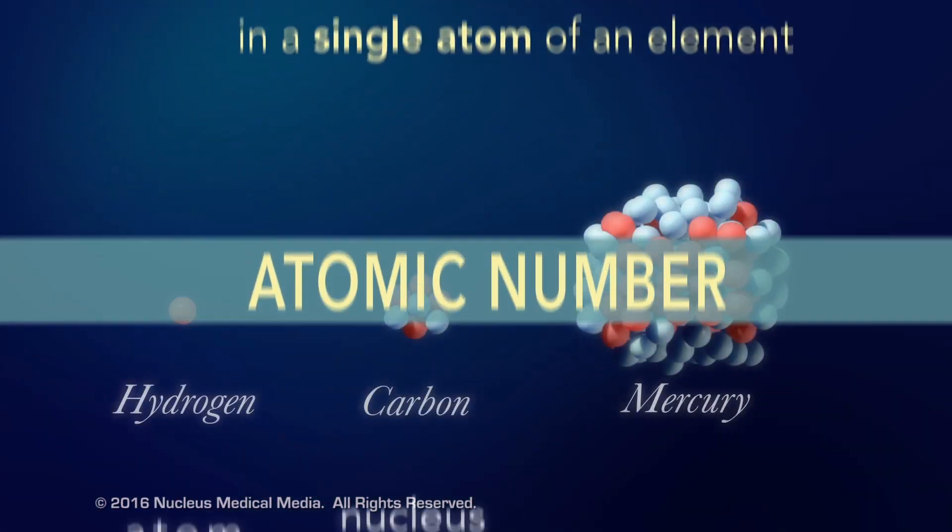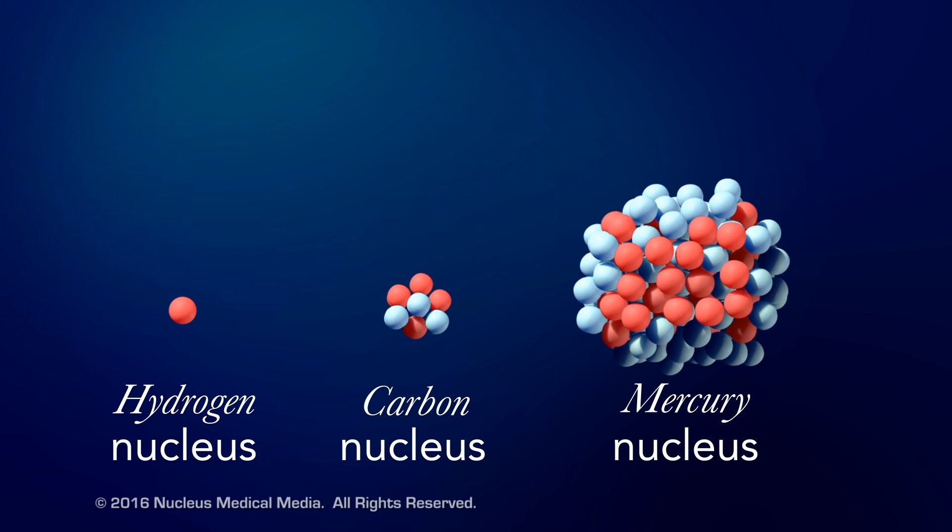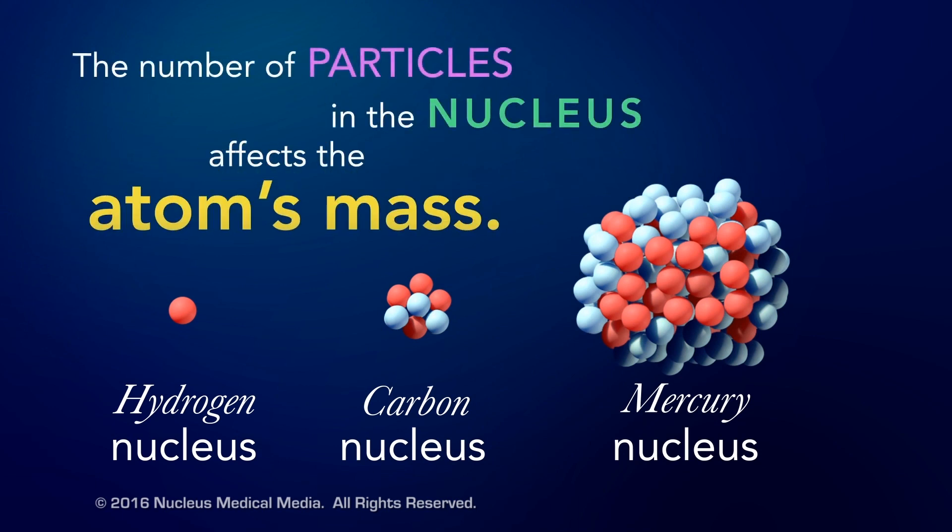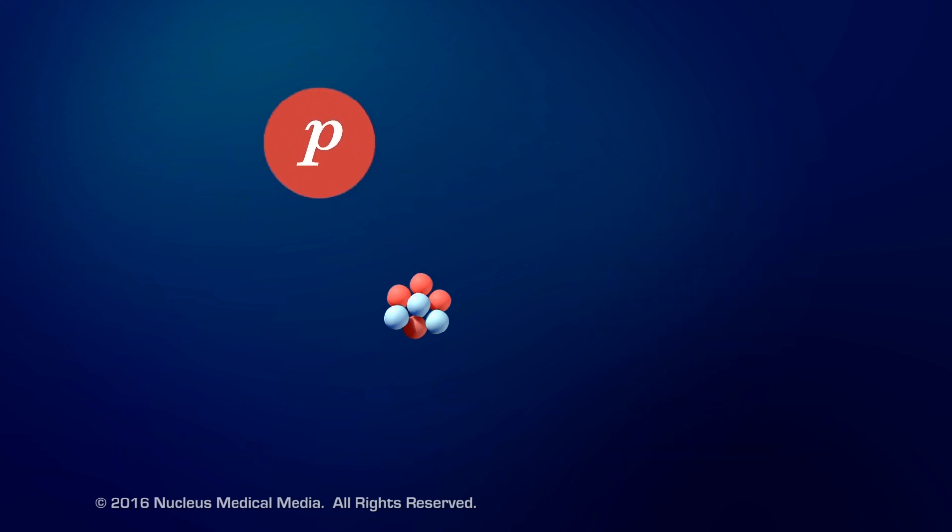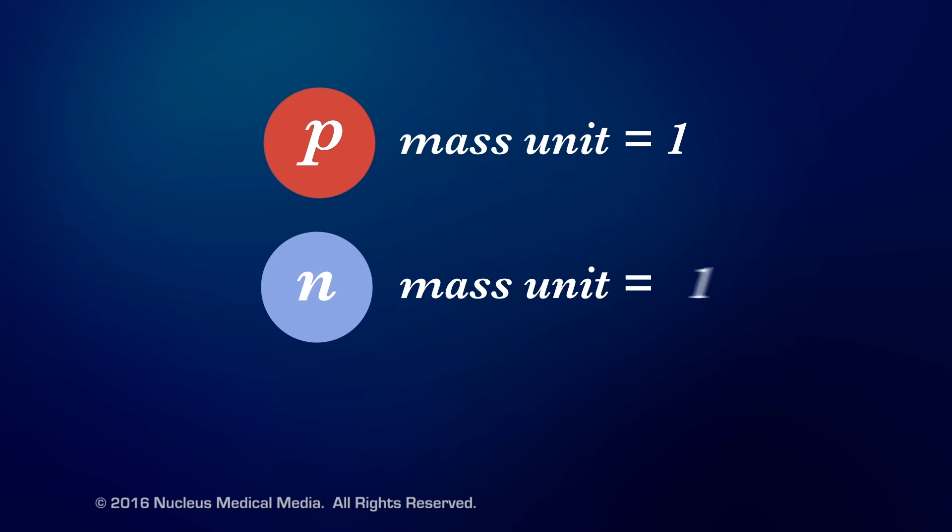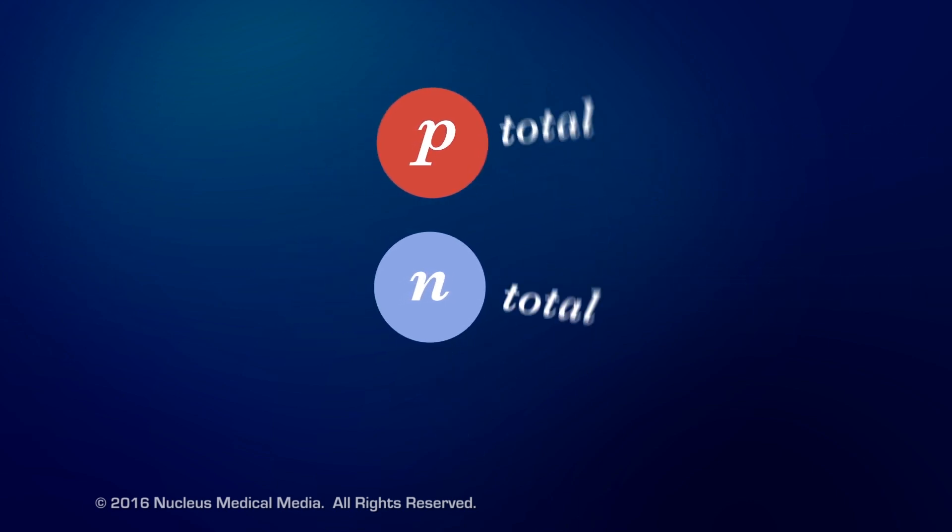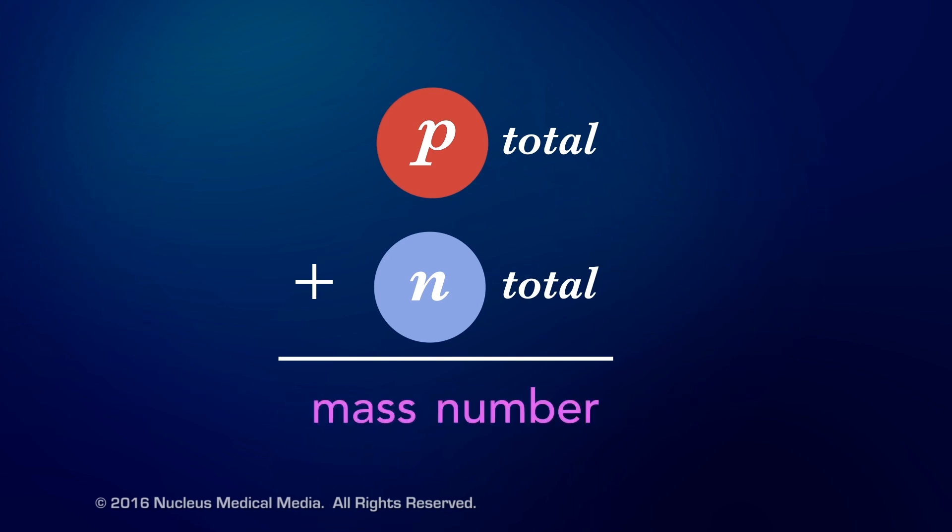Since the nucleus contains almost the entire mass of an atom, the number of particles it contains has a big effect on the atom's mass. Each positively charged proton has a mass unit of one, and each neutral neutron also has a mass unit of one. The total number of protons and neutrons in the nucleus of an atom is called the mass number.